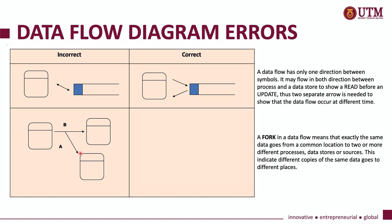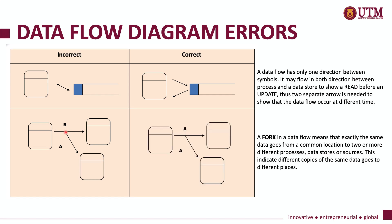Another data flow diagram error is what we call a fork. If you have a data flow that forks, it must carry the same data — not different data. This means the same data from process one is being passed to both process two and process three. A fork should always represent the same data in the data flow.